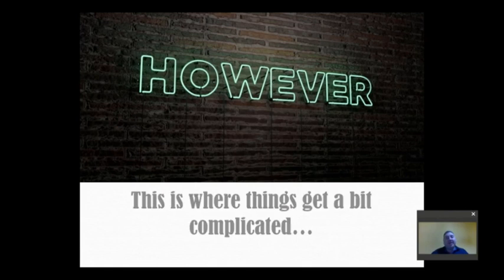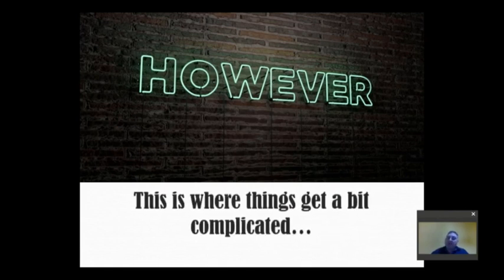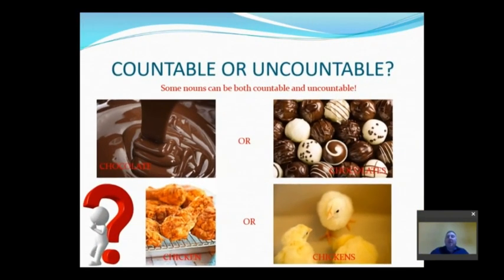However, and this is where things get a bit complicated I must say, but please stay with me. Countable or uncountable? Sometimes students can get confused. Let's take chocolate for example. On your left, we have melted chocolate. We can't determine exactly the weight, quantity, or amount. But on the right side, we have some form, some shape - chocolates.